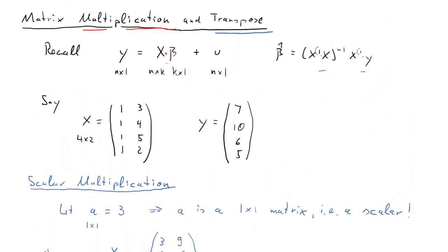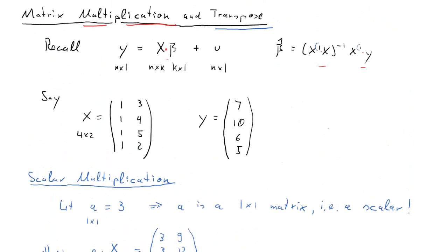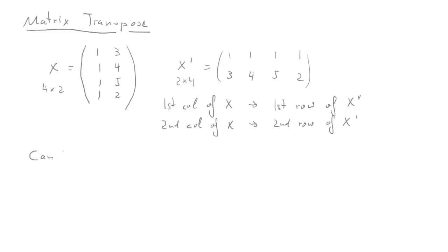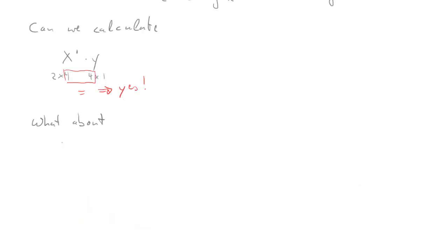So why is that useful? Let's go back to our calculation of the OLS parameter estimator. Here we need to calculate, for instance, X prime times Y. X times Y we couldn't calculate, but can we calculate X prime times Y? We've just learned that for our particular example, X prime is 2 by 4, Y is 4 by 1. And now indeed the two inner dimensions agree, that means yes, we can calculate this.